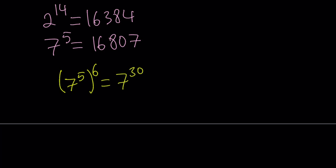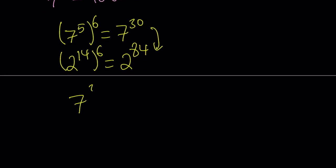And 2 to the power of 14, I'm going to raise it to the 6th power as well. That's going to give me 2 to the power of 84. Now, since we already know that 7 to the 5th power is greater than 2 to the 14th power, this implies that 7 to the power of 30 is greater than 2 to the power of 84.